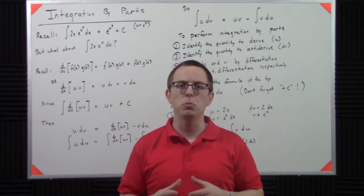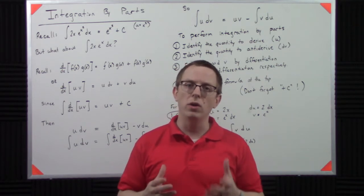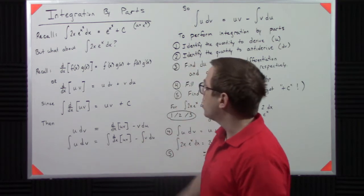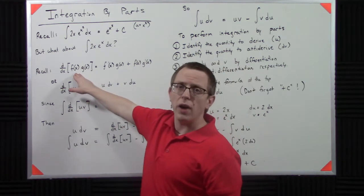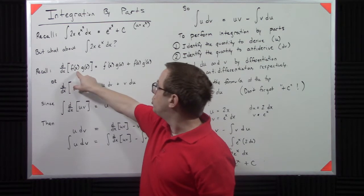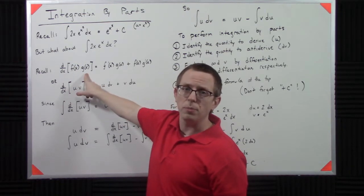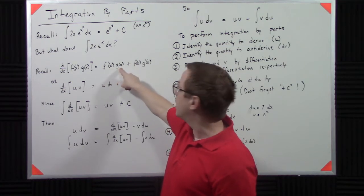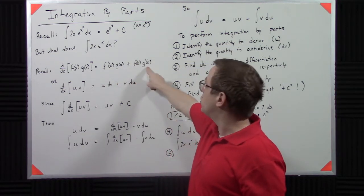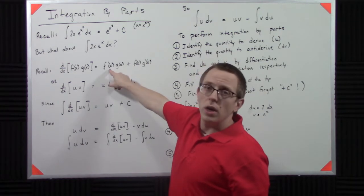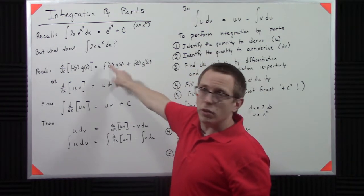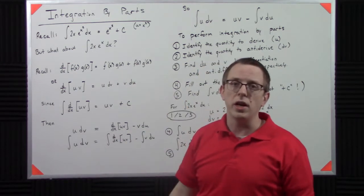Integration by parts exploits a hopefully well understood topic in differentiation, that of the product rule. So if you go back to the product rule, if I have the derivative of two functions multiplied together, I get the derivative of the first times the second plus the first times the derivative of the second. So in each case, I take a derivative on the first one, then I take a derivative on the second one.